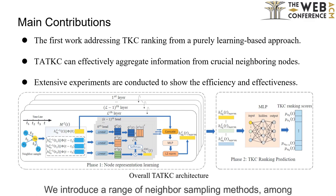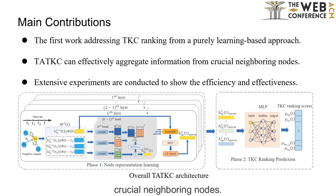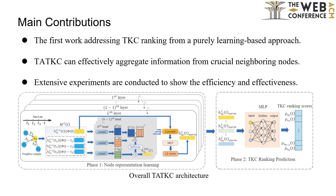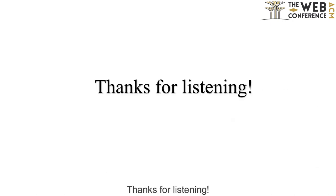We introduce a range of neighbor sampling methods, among which degree-based sampling proves highly effective in aggregating information from crucial neighboring nodes. Extensive experiments are conducted to show the efficiency and effectiveness. Compared with the state-of-the-art exact method, TATKC is capable of up to around six times speedup. Thanks for listening.